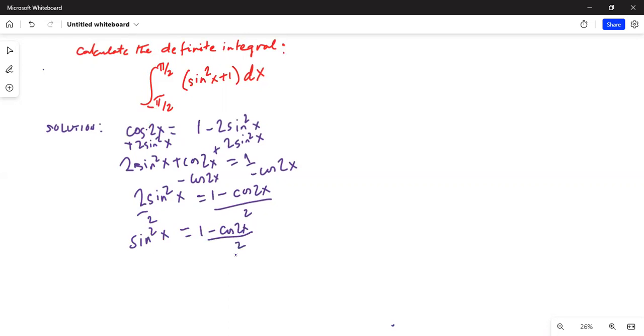We will substitute this expression for sine square x in the original problem. So, we will get integration from minus pi over 2 to positive pi over 2. For sine square x, I will write 1 minus cosine 2x divided by 2 plus 1 dx.